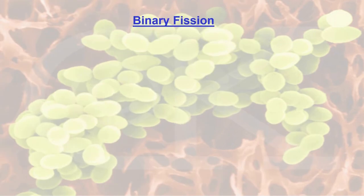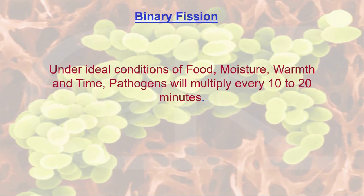Binary fission means literally doubling in size. Under ideal conditions of food, moisture, warmth, and time, pathogens and other bacteria will multiply every 10 to 20 minutes. Remember for the exam that bacteria double in size — if the answer choices include '10 to 20 minutes' or just '10 minutes,' choose the one with 10 minutes, as that is the correct answer. Binary fission is simply the term for how bacteria grow or multiply.